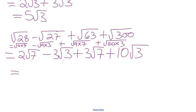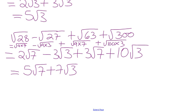So how many root 7s do we have? 5 root 7s. How many root 3s? 7, so plus 7 root 3. Watch out for the signs when adding or subtracting — we could have negative terms.